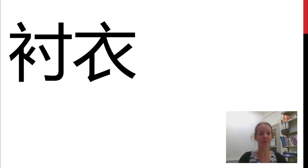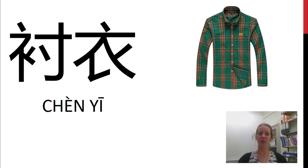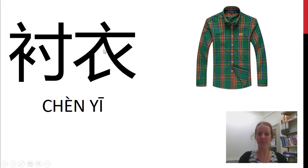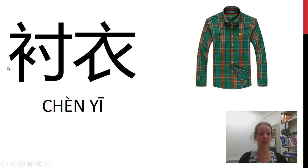First clothing word: 衬衣. This is shirt — generally a buttoned-up shirt. On the right hand side we have 衣 from 衣服. But when we make this character a radical and put it on the left hand side, it looks different. This is our clothing radical and you'll see it in a lot of different clothes that we talk about.